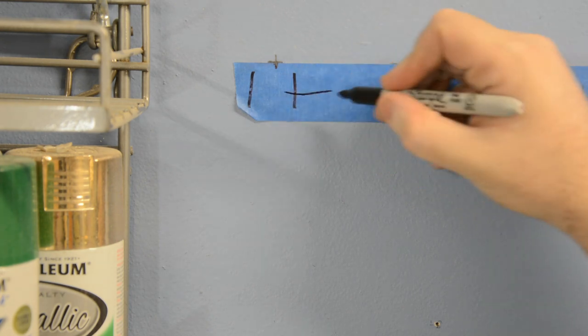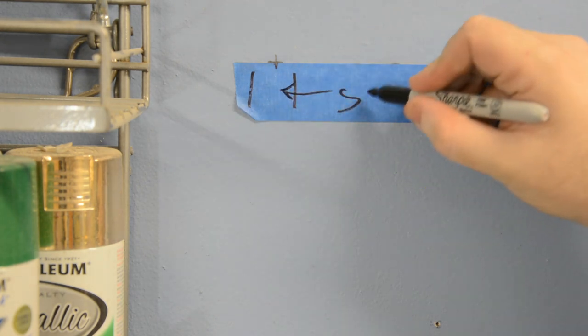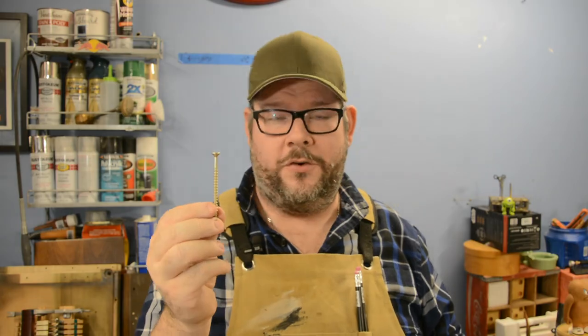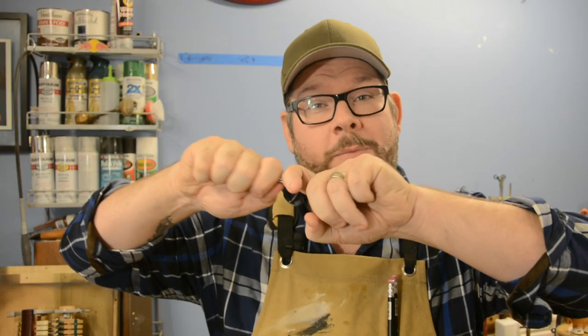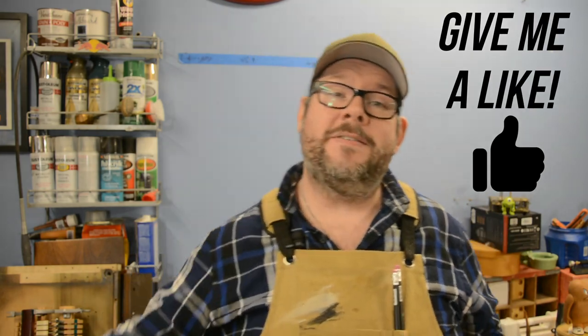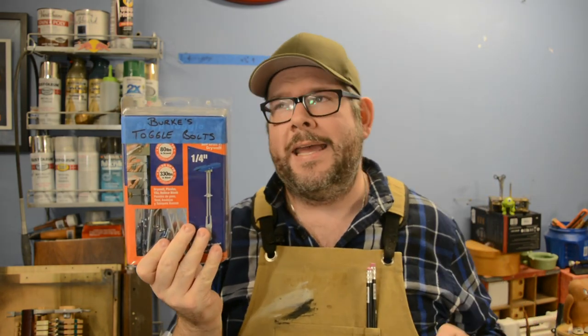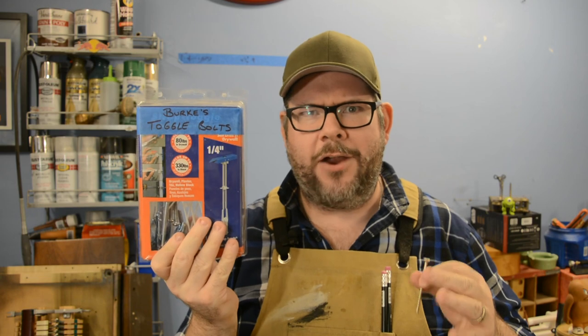Now it just so happens that the cabinet that I want to hang and the location I want it to be hung requires us to use two different fasteners. Now the first one, because we have a stud, I'm simply going to use a three inch wood screw. Now this will go directly in and offer plenty of power when it comes to holding the piece down because it's directly into a wooden stud. On the other end where there is no stud, I'm going to bust out these, which you guys have actually seen me use before in my entryway coat hanger video. If you haven't checked that one out, I'll link it somewhere up here.